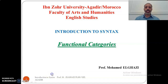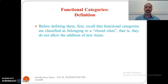We are going to first study their definition. How can we define functional categories? Before defining them, recall that functional categories are classified as belonging to a closed class. That is to say, they do not allow the addition of new items to them. We have seen this before, and we said that, for example, you will never see in English the addition of new prepositions, new conjunctions, or new negative markers.